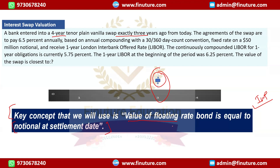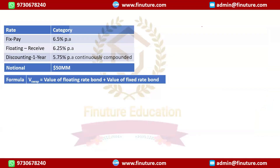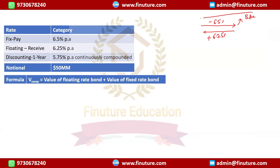One may ask how bonds came into the picture when we were talking about a swap. An interest rate swap can be thought of as two bonds: since you are paying 6.5% fixed and receiving 6.25% floating, the fixed leg is like a fixed-rate bond you have issued — you pay coupon of 6.5%. The floating leg is like a floating-rate bond you have purchased — you receive a coupon of 6.25%.